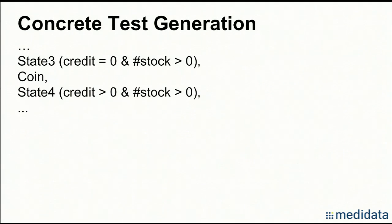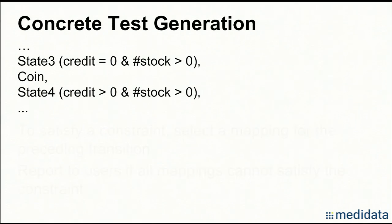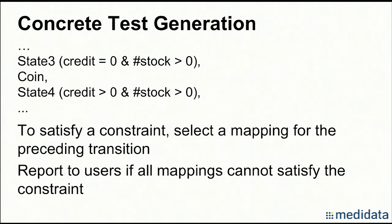Now that we have mappings for constraints and transitions, concrete test generation can be automated. For test generation, we select proper mappings for transitions so that constraints can be satisfied. When constraints in state three are satisfied, we select a mapping for 'coin' so that constraints in state four are also satisfied. If the selected mapping cannot satisfy the constraints in state four, we select another mapping. If all mappings fail to satisfy the constraints, testers will be notified and need to provide additional mappings. If no mapping can satisfy the constraints, either the model or the program has something wrong, or there is a mismatch between the model and the program.